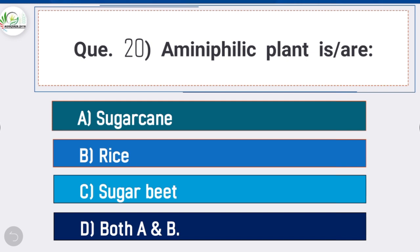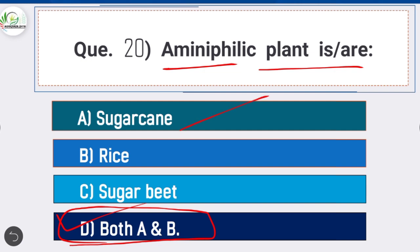Question 20: Ammonophilic plants are — option D is correct: both A and B, that means sugarcane and rice. Both plants like rice and sugarcane growing under high soil moisture conditions can be considered as ammonophilic plants.